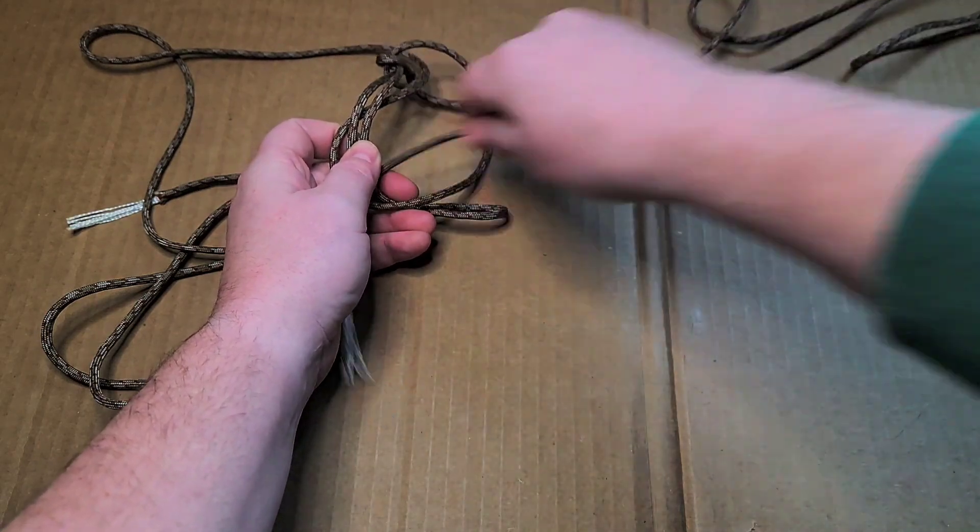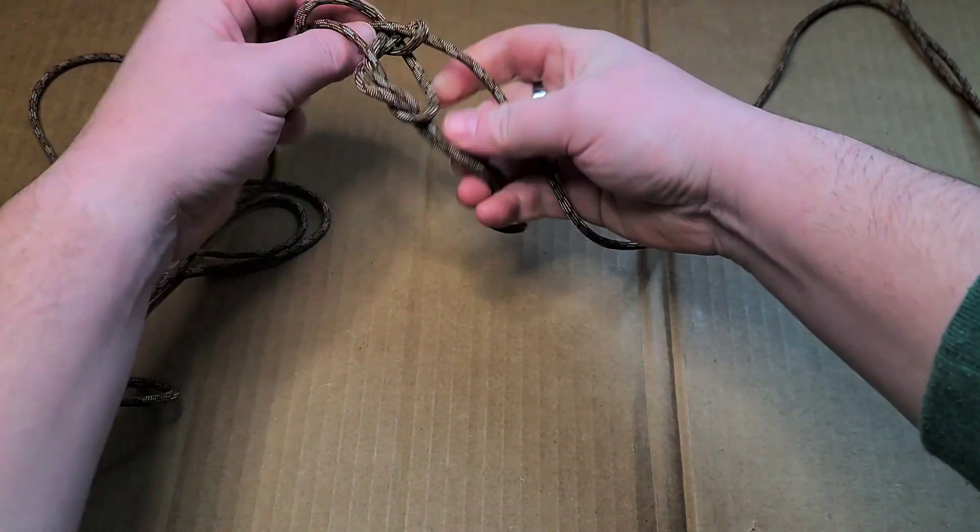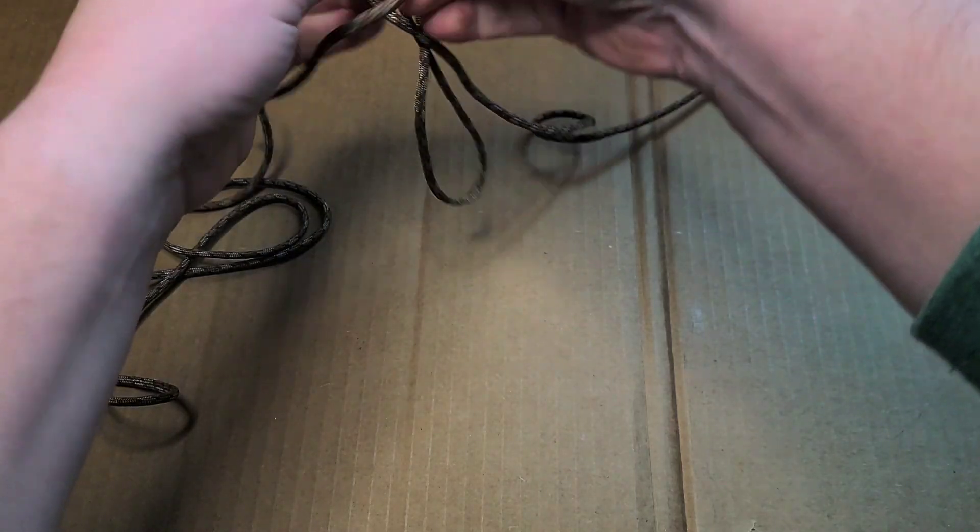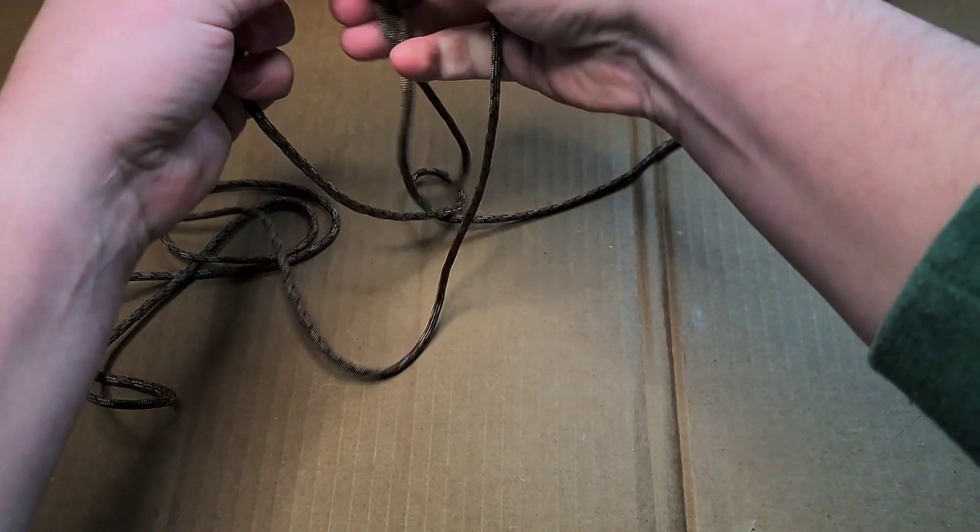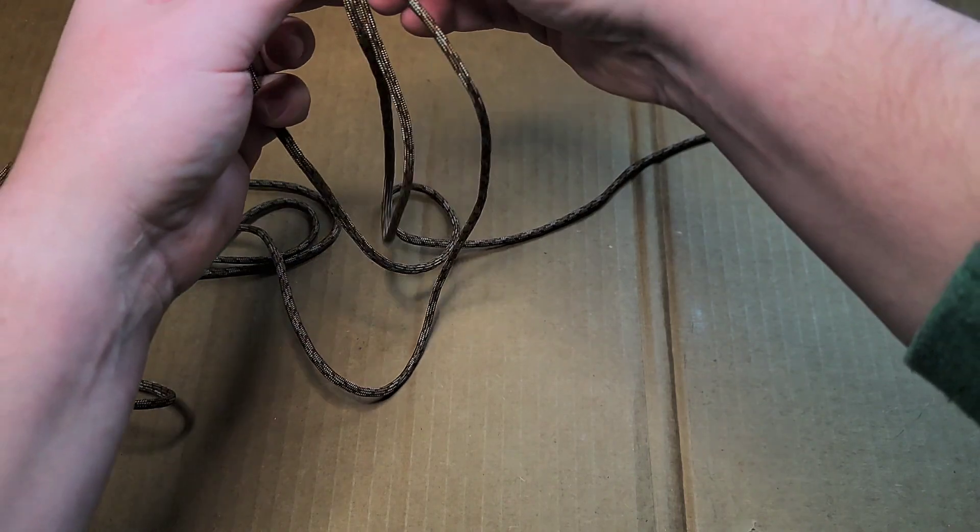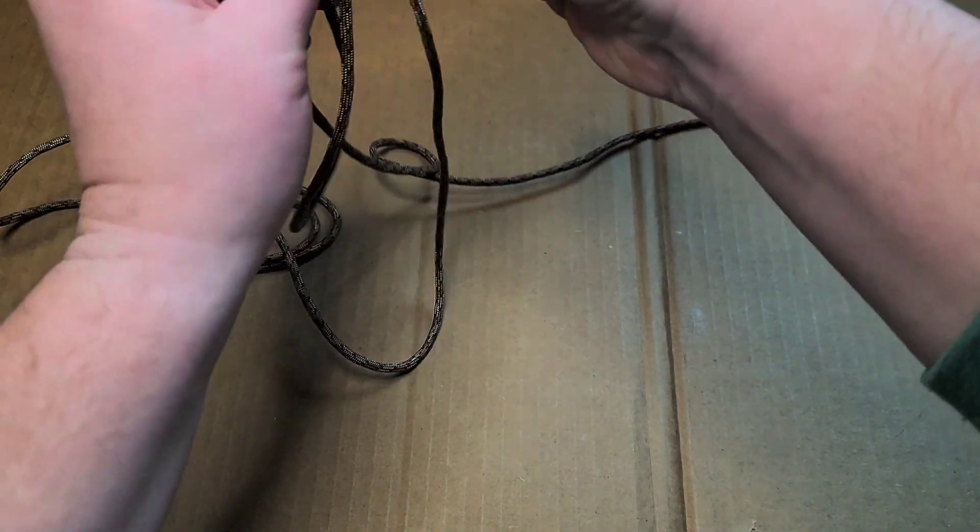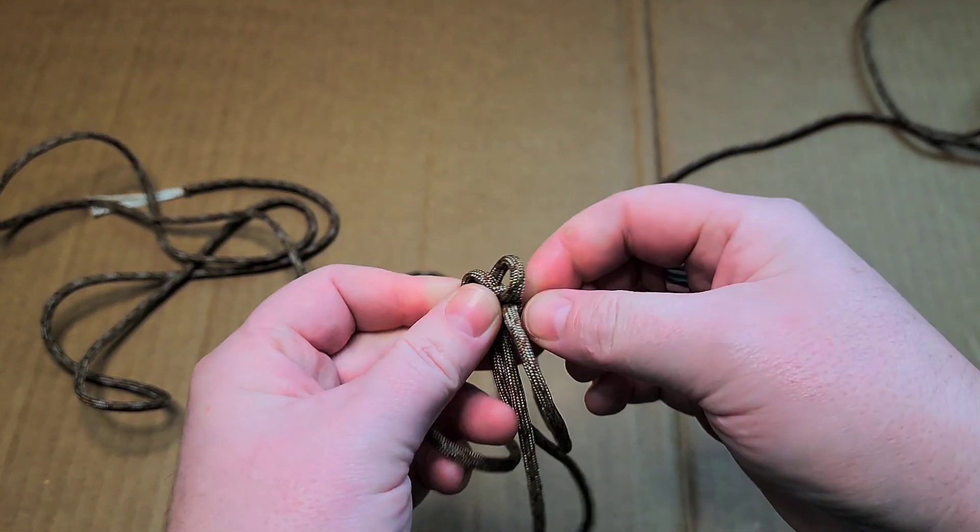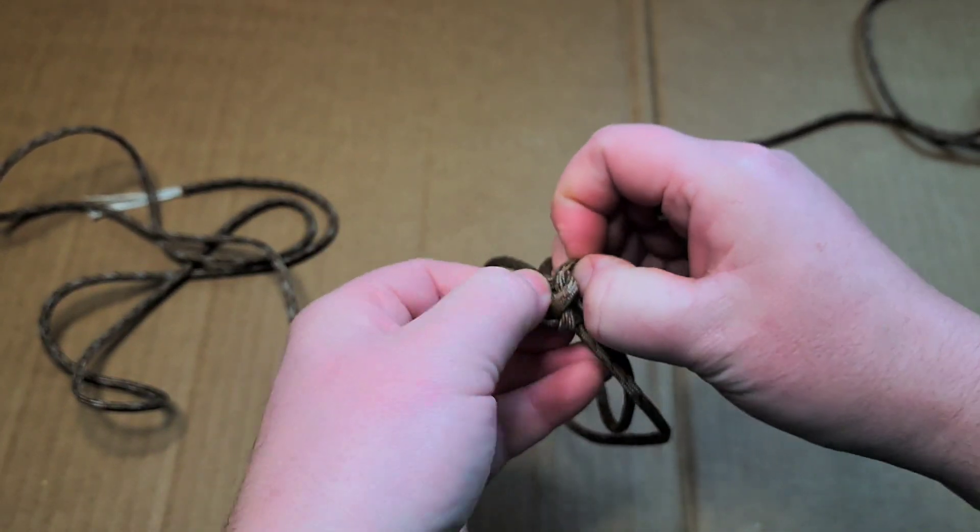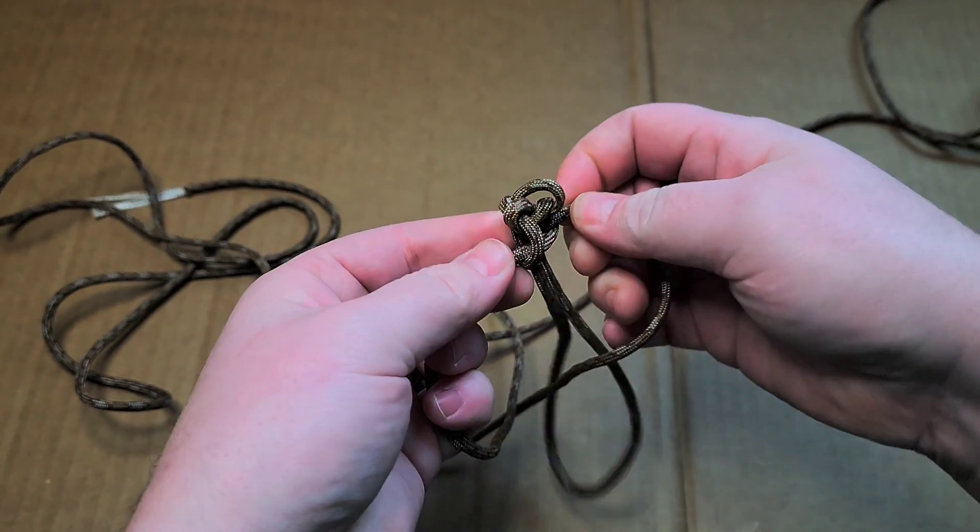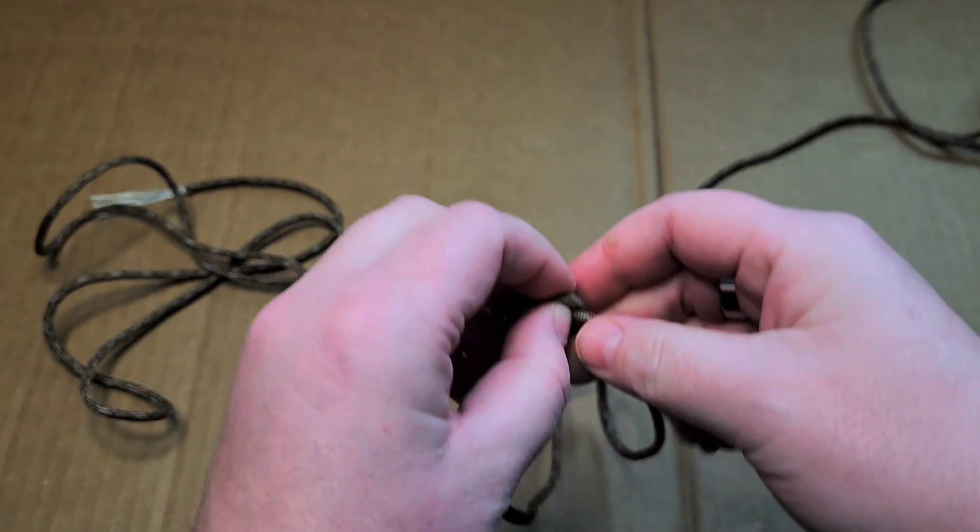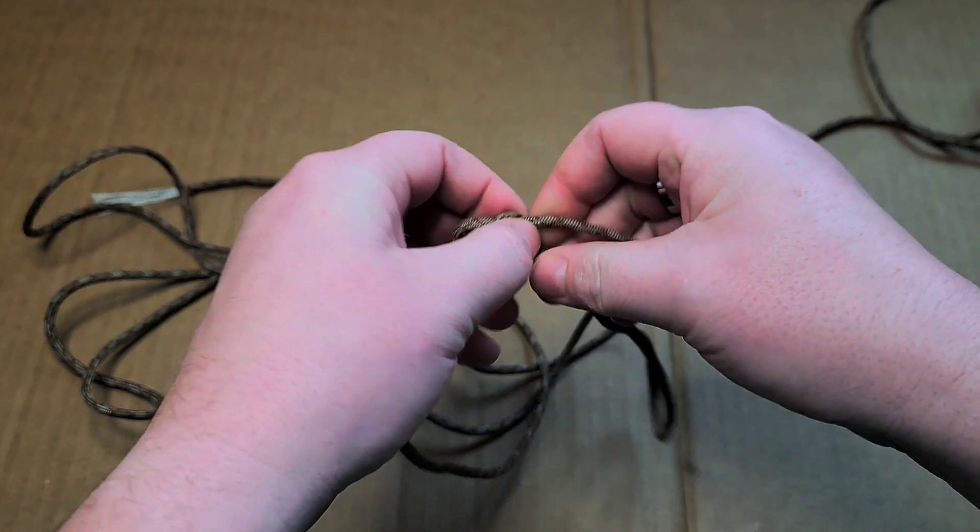And then you'll take this left side and you'll go underneath it all right here and through that loop. See I got a little bit more than I want so I'm going to tighten that down, that extra. Got a little extra than I'd like, but if it's your first one it might be easier for you to work with.